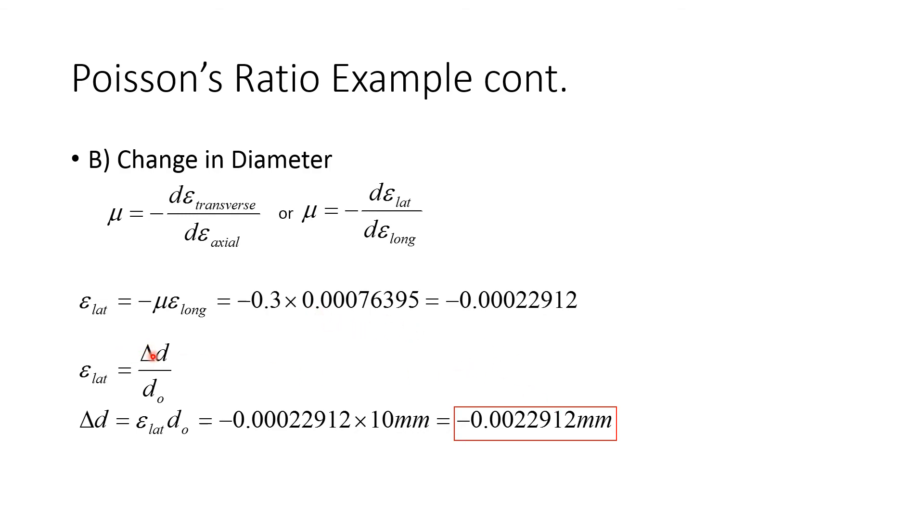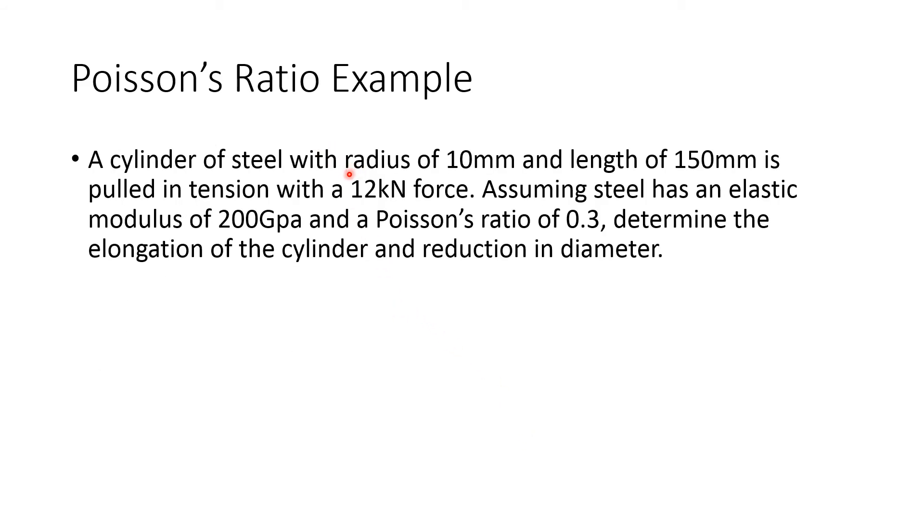So to solve for the strain in the lateral direction specifically, well, to solve for the change in diameter specifically, we need to multiply the strain in the lateral direction times the initial diameter. So here we have the lateral strain .00022912 multiplied by the 10 millimeters, and that will give you negative .0022912. I just realized I've made a mistake on this slide. I meant to put diameter here, not radius. So that's why we have the 0.25, and that's why we have the 10 millimeters here. So pretend that I put diameter here, not radius.